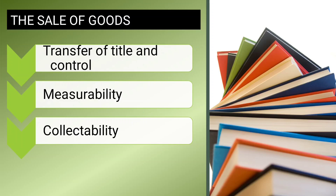For revenue recognition from sale of goods, certain conditions must be satisfied. The first condition is transfer of control and title — that is, ownership, risk, and reward must transfer from the seller to the buyer at the point of sale.